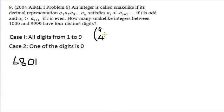And once we've chosen them, there are five snakelike integers that we can construct. That's what we did last time.